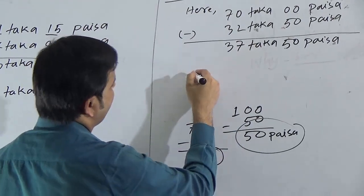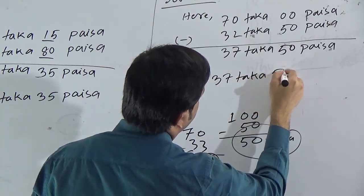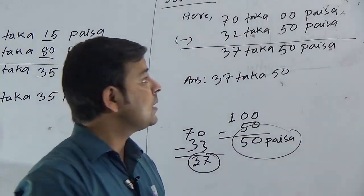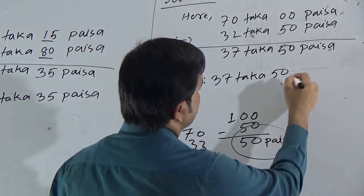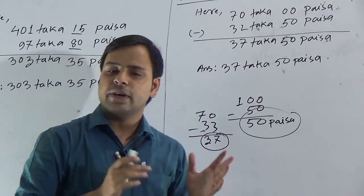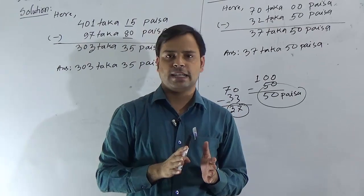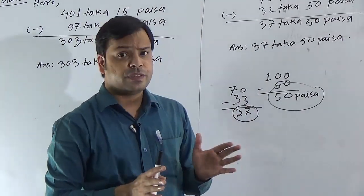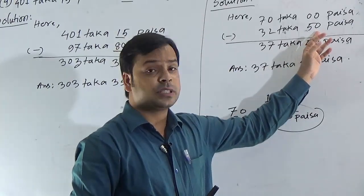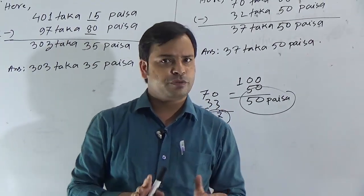The required answer for this question is 37 taka 50 paisa. Students, remember: for this type of subtraction, you have to subtract paisa from paisa and taka from taka. If the paisa is smaller than the paisa you want to subtract, you have to take 1 taka as loan. Remember this — don't forget and follow this technique.